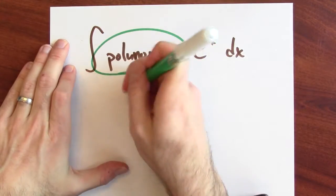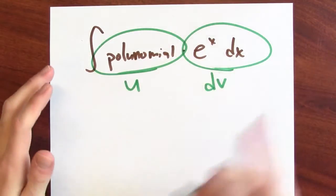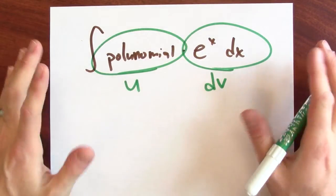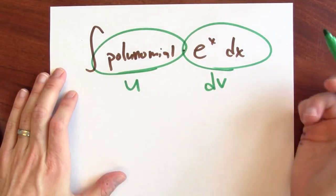Well, I'd make this be u and I'd make this be dv. And why is that such a great choice? Well, think about what parts lets you do. Parts lets you differentiate part of the integrand if you're willing to anti-differentiate the rest.